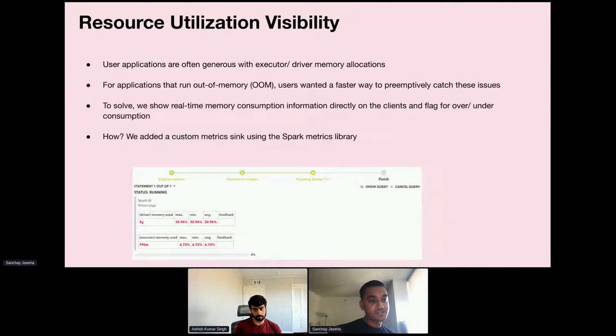Next, we noticed that user applications are often very generous with executor and driver memory allocations. This obviously causes unnecessary resource wastage on our Yarn cluster. On the other hand, for applications that run out of memory very frequently, users were requesting a faster way to preemptively catch these issues so that tuning can be faster. To solve this issue we show real-time memory consumption information directly on the clients and we flag the applications for over and under consumption, as you can see in the gif here, so that users can take actions on it. How we do it: we added a custom metric sync using the Spark metrics library in the Spark code itself, which periodically pushes these metrics to OpenTSDB, which our clients use—BigPi in our case—and return the information back to the user-facing clients like Query Book.